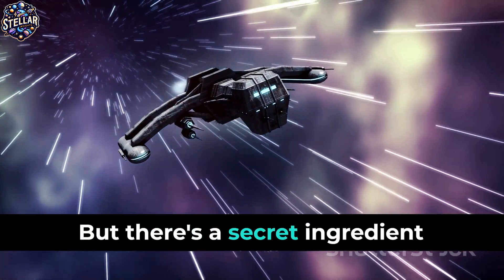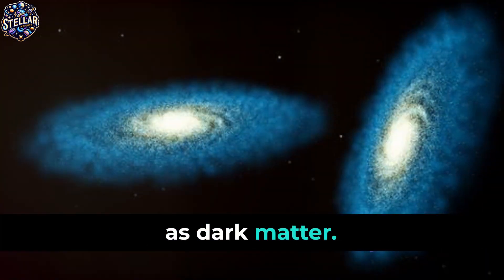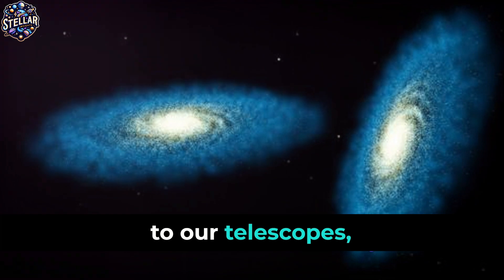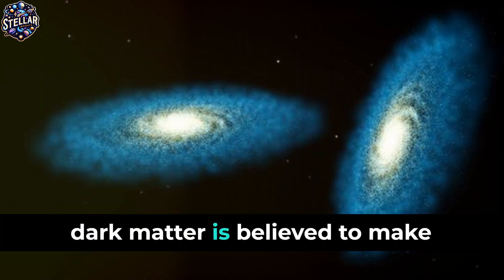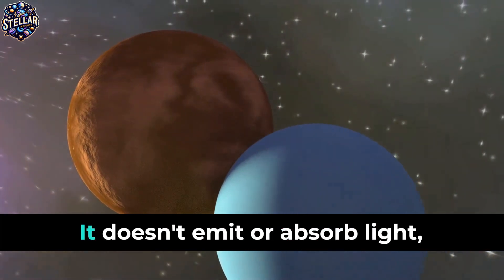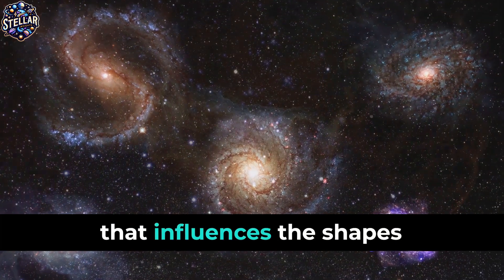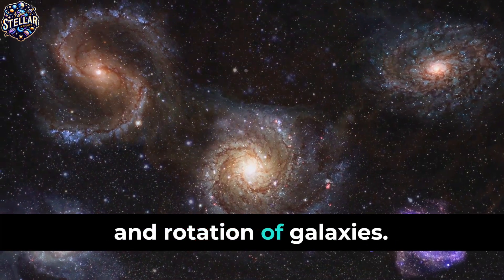But there's a secret ingredient in our recipe: a mysterious entity known as dark matter. Despite being invisible to our telescopes, dark matter is believed to make up about 85% of the universe's matter. It doesn't emit or absorb light, but exerts a gravitational pull that influences the shapes and rotation of galaxies.